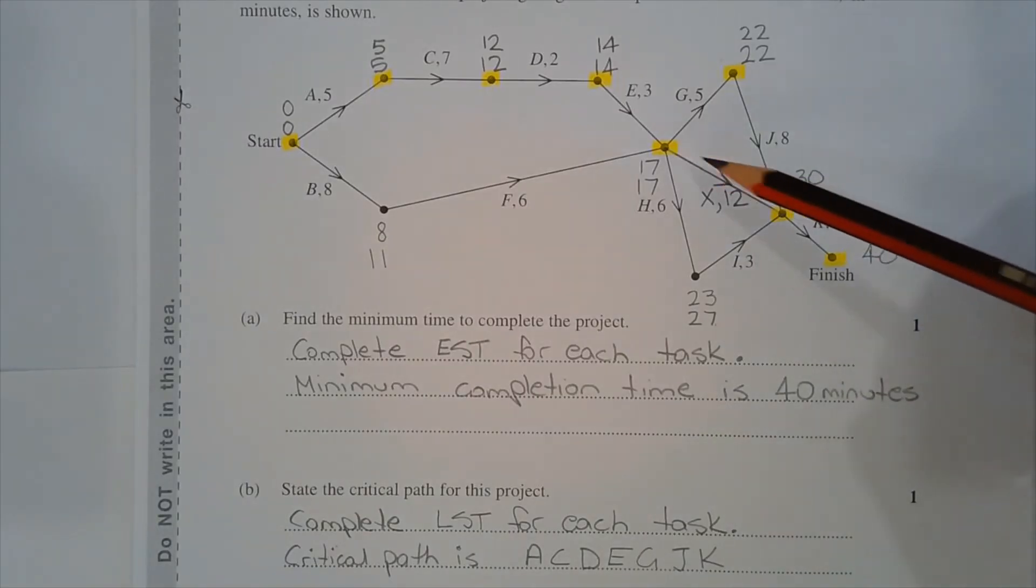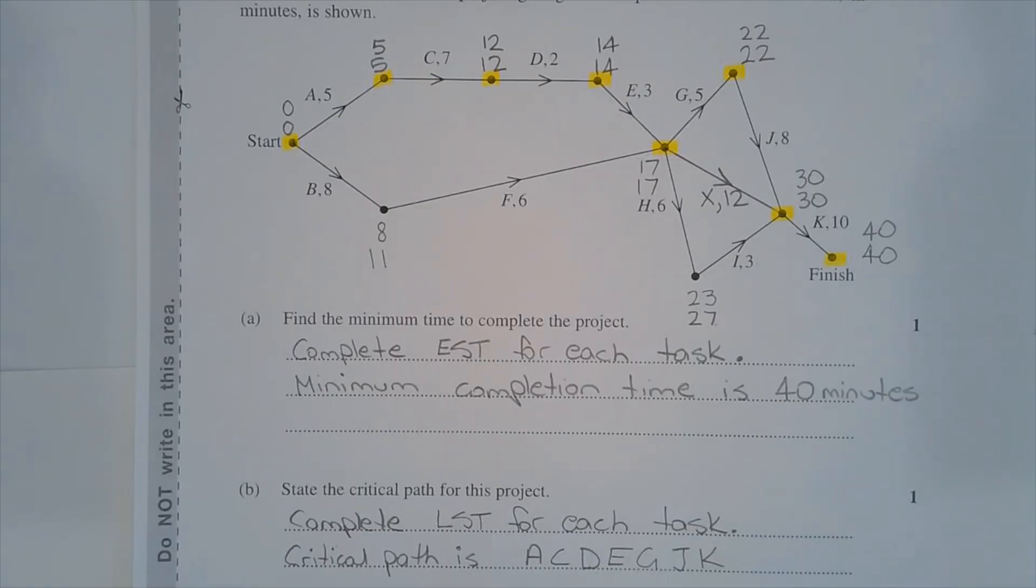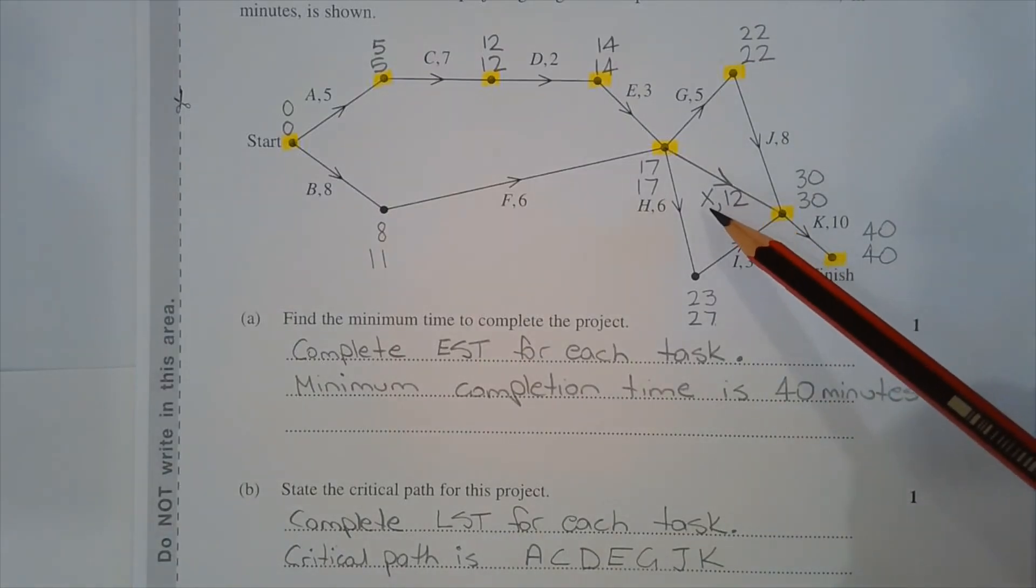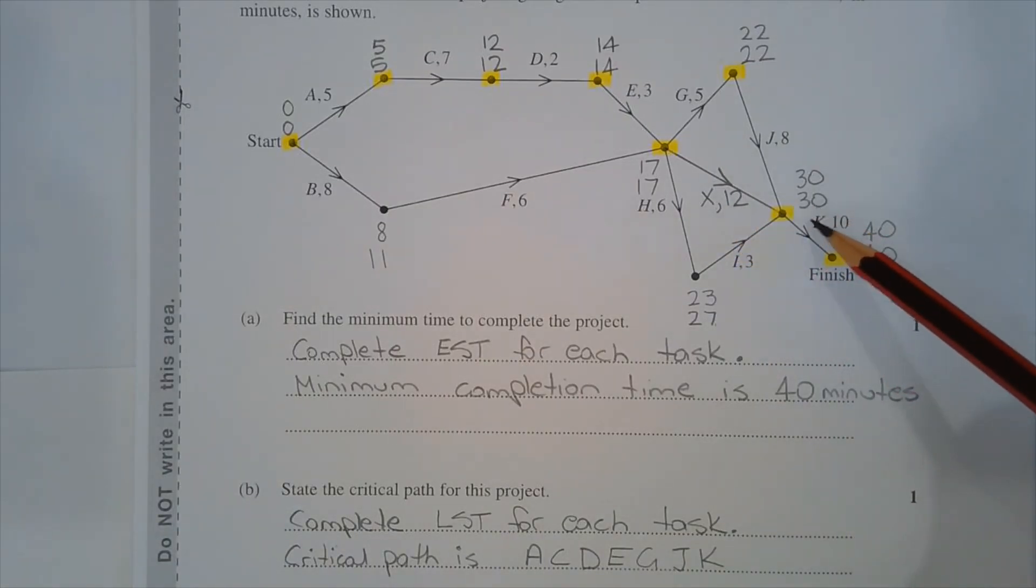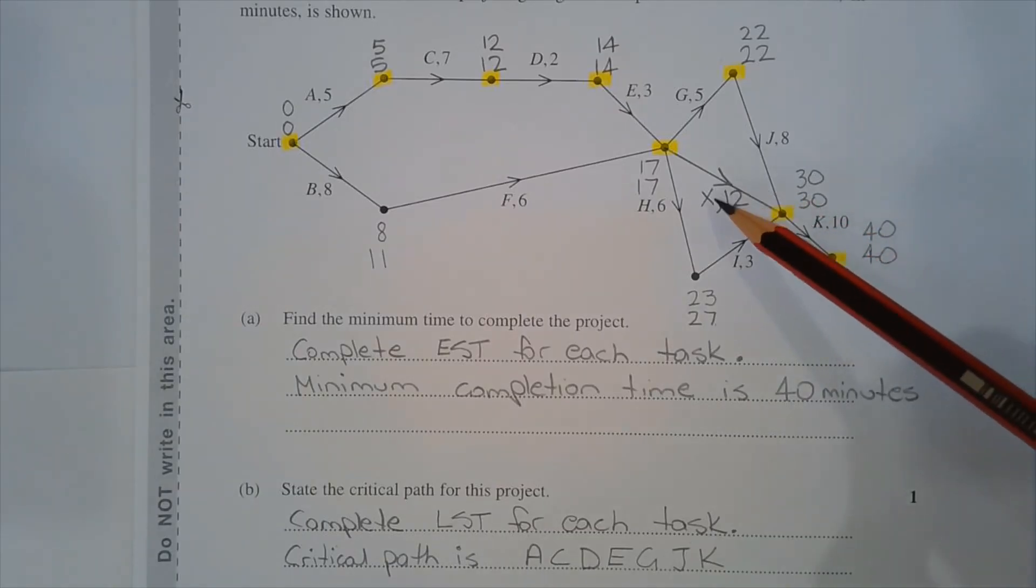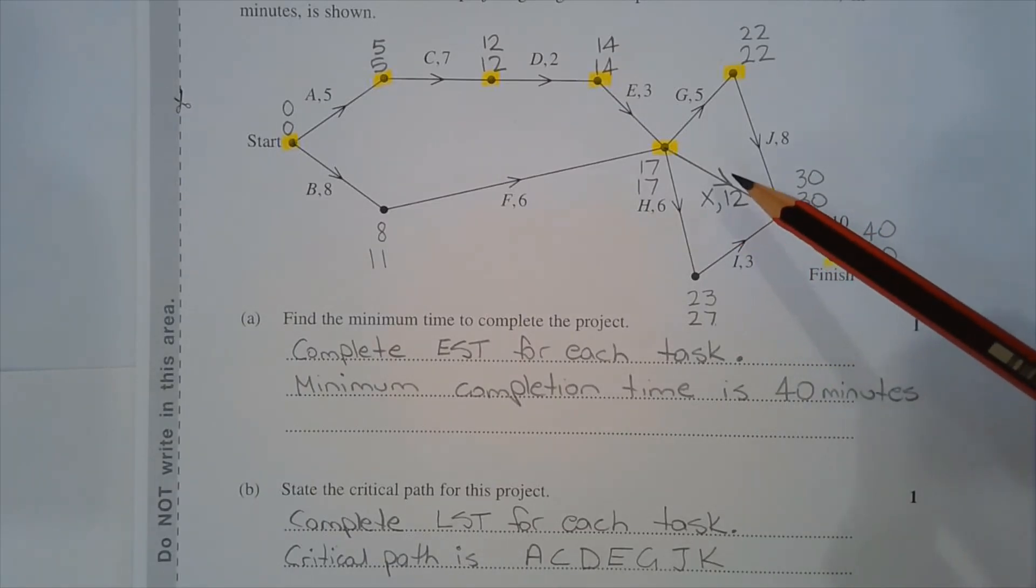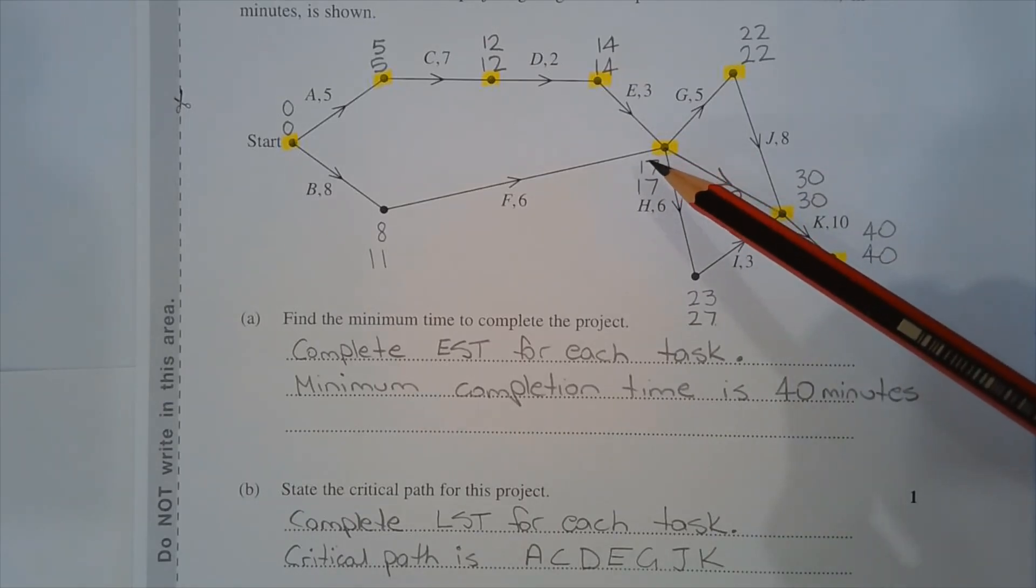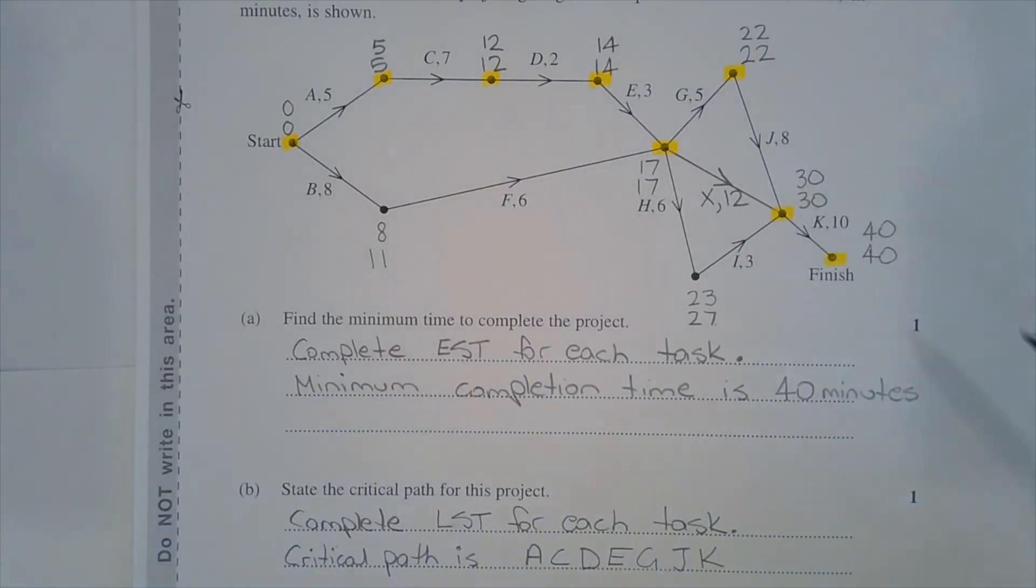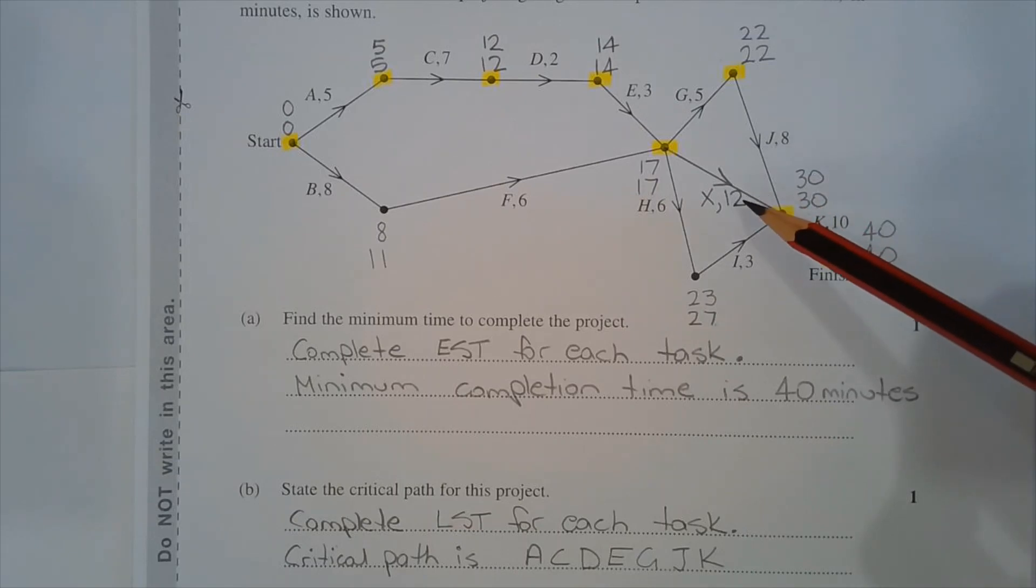Here is task X on the network diagram located between this vertex and this vertex. The float time for task X can be found by taking the LST of task K, subtracting from that value the completion time of task X and the EST or the earliest start time for task X. So 30 minus 12 minus 17 equals 1.